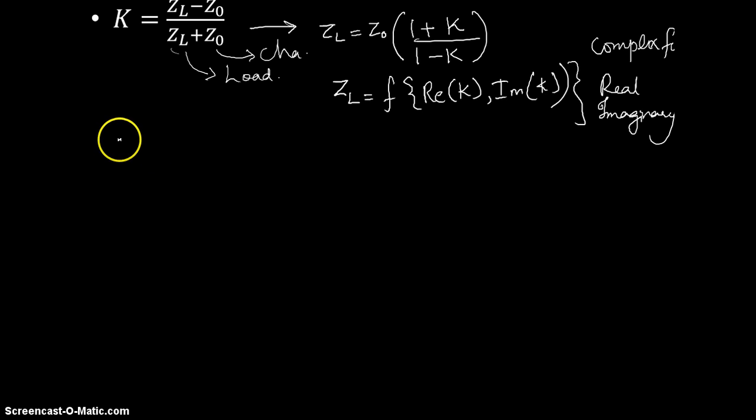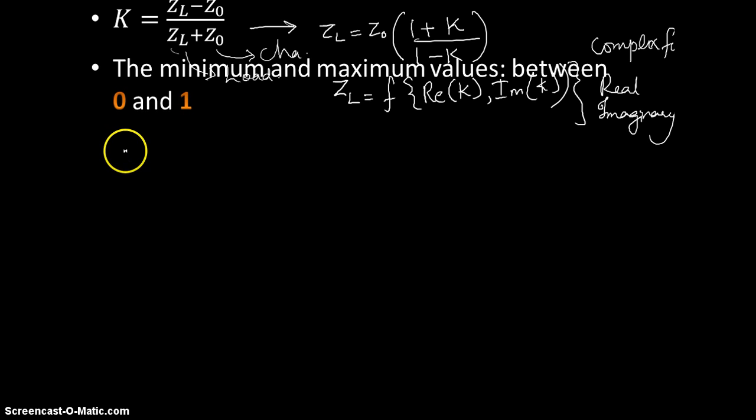What is the maximum and minimum value that K can take? The minimum and maximum values can be between 0 and 1. If you have a K value equal to 0, it simply means that there is no reflection.